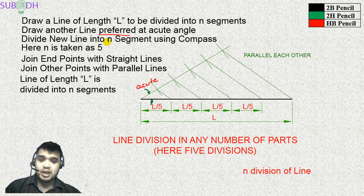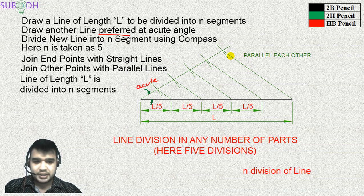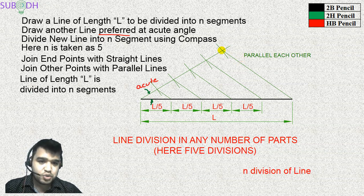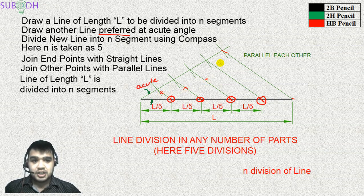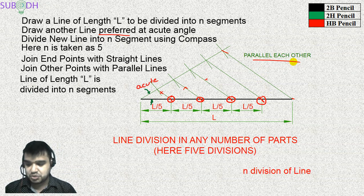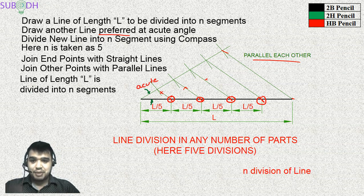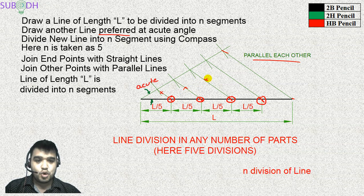One important thing to remember is that drawing the construction lines alone is not enough. After completing the division, you should use the parallel function to mark the division points clearly on the original line. The auxiliary construction lines — the ones used to set up the division — can then be omitted or made thinner so the final drawing is clean and easy to understand.